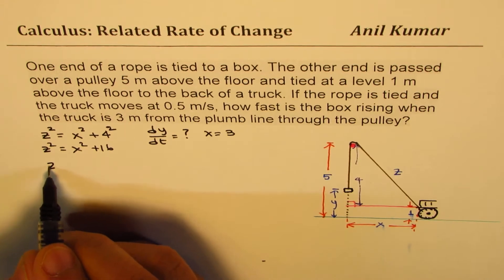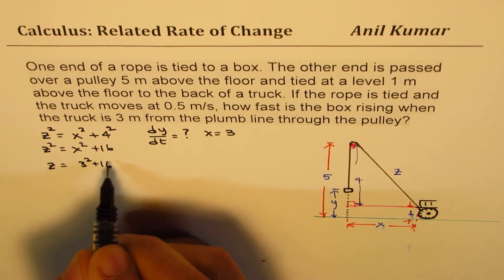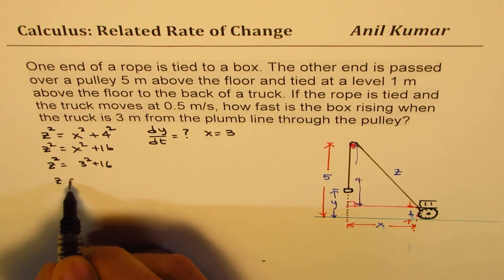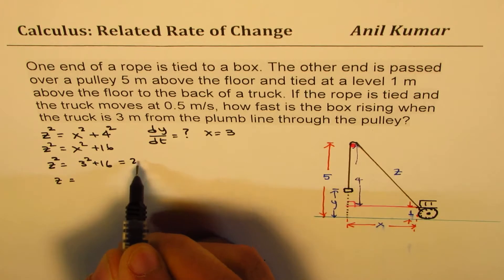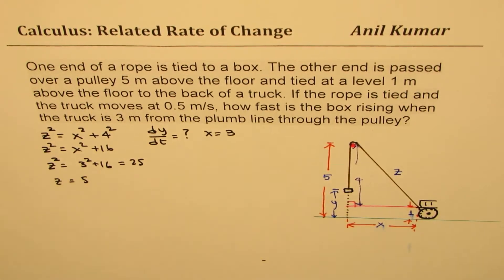So Z equals 3 squared plus 16. Let's say Z squared equals this. So Z is equal to, which is 9 plus 16 is 25, so Z is 5. Square root of this.